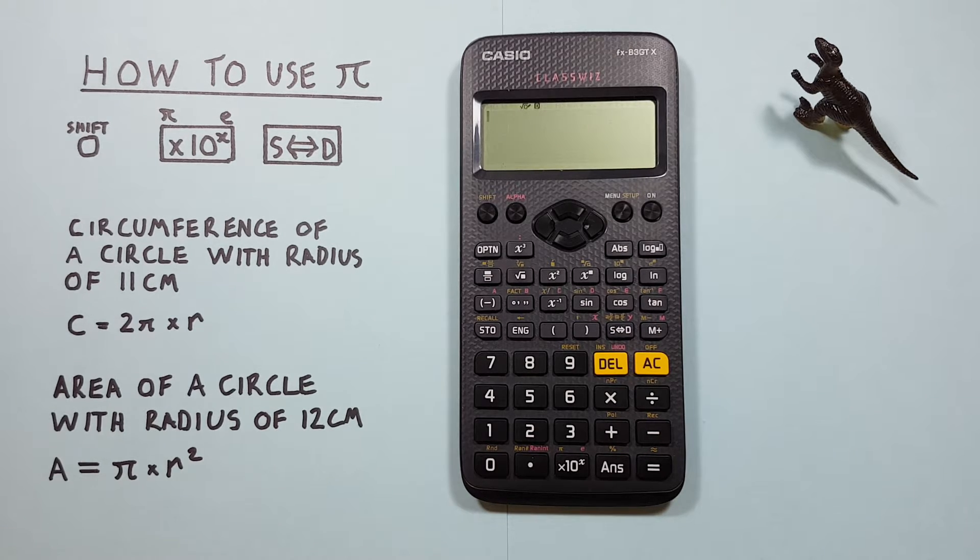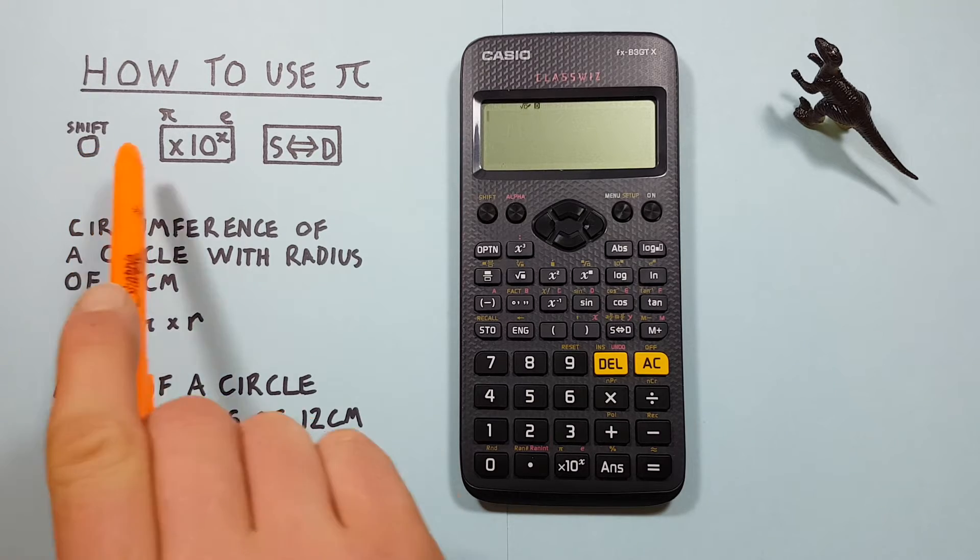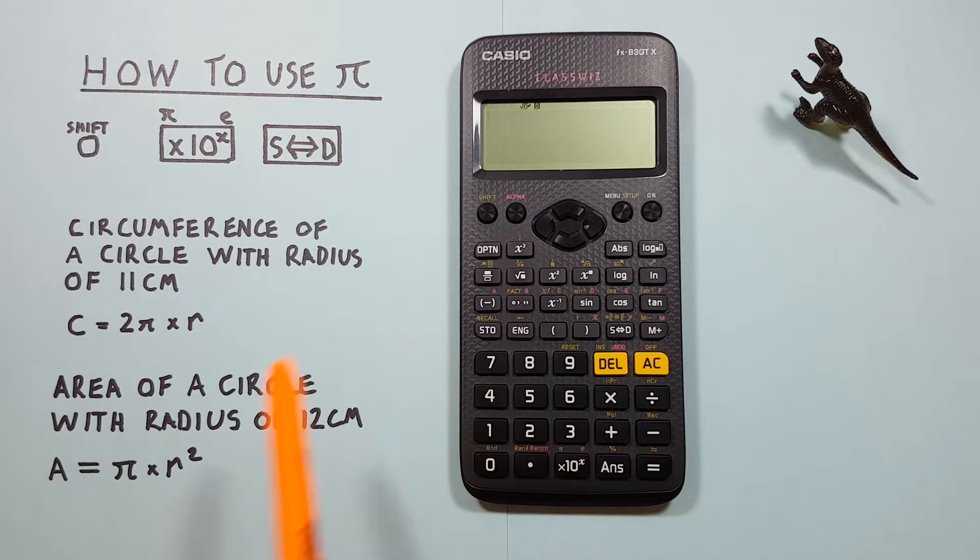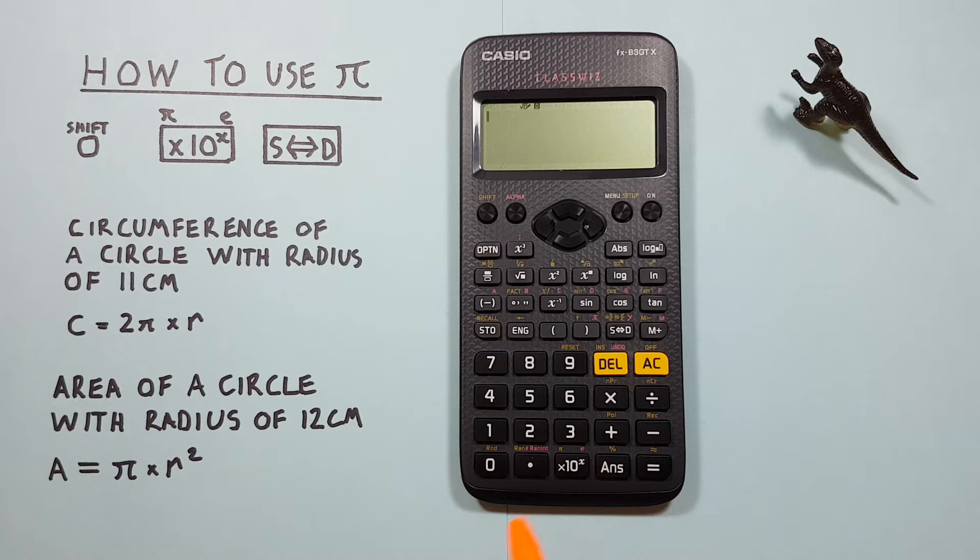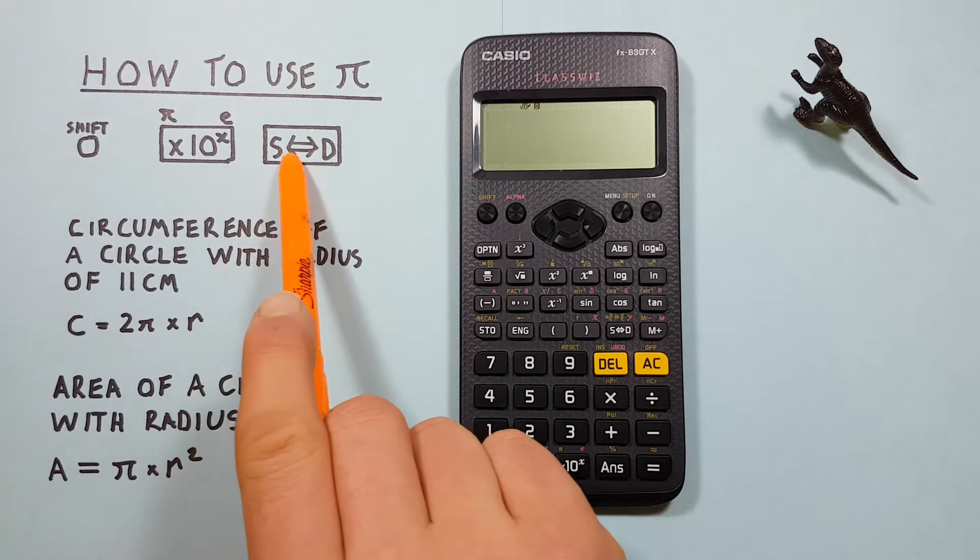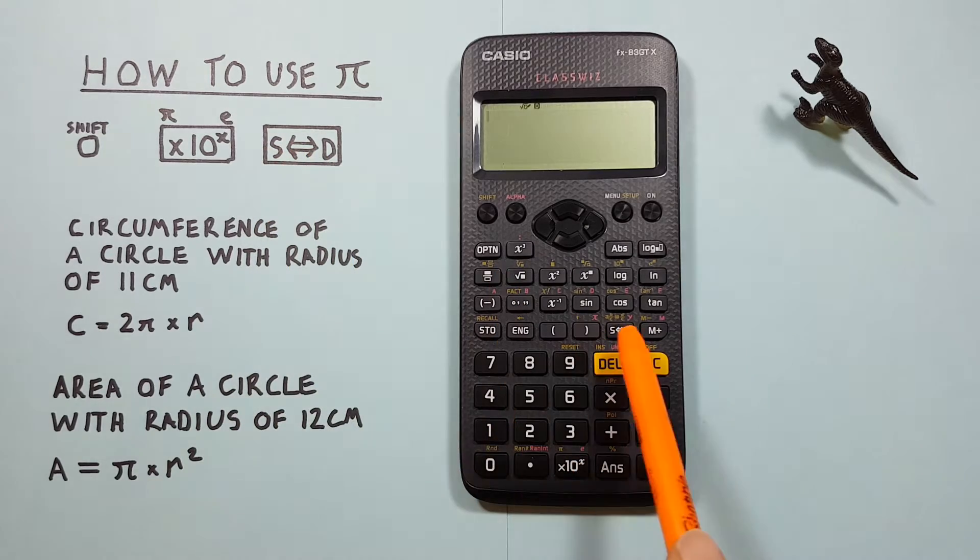To do this we'll be using the shift key, looks like this, located here. The times 10 to the X key with the shift or second function of PI that looks like this, located down here at the bottom. And we'll use the S to D or conversion key that looks like this, located here.